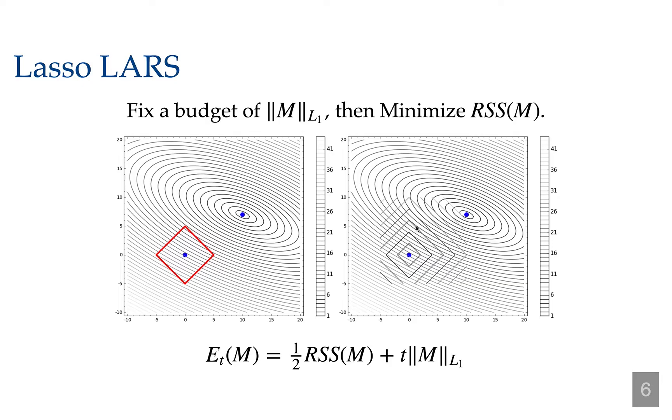But then something happens right about here. Notice at this point, the two level sets are tangent suddenly. Instead of just crossing transversely, they're suddenly tangent.